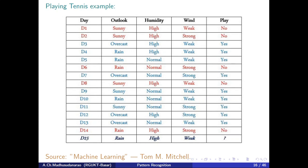Let's look at a playing-tennis example. We have training examples from day 1 to day 14. The features are: outlook (sunny, overcast, rain), humidity (high, normal), and wind (weak, strong). The output class label is whether to play tennis — yes or no. Based on these three features we need to decide whether to play or not.